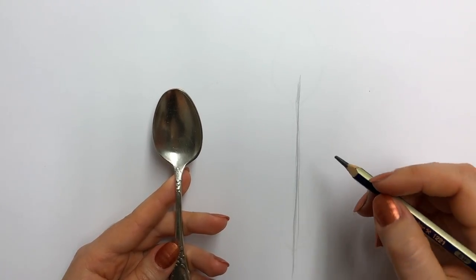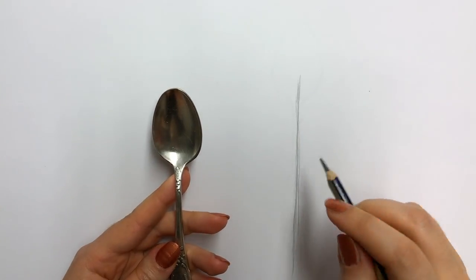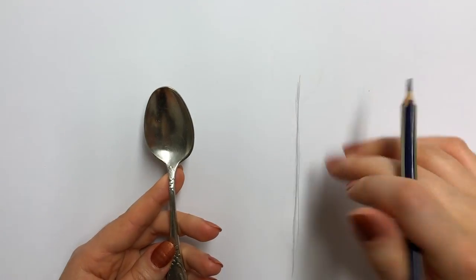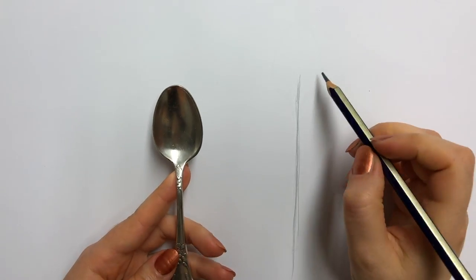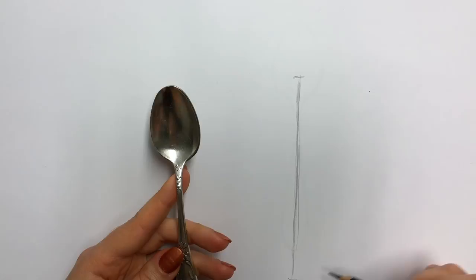But if you are using a ruler, people have a tendency to really press on the pencil hard. Just keep in mind this line will be erased once we've finished building everything. So don't do that. Okay, now I'm going to mark the top and the bottom.